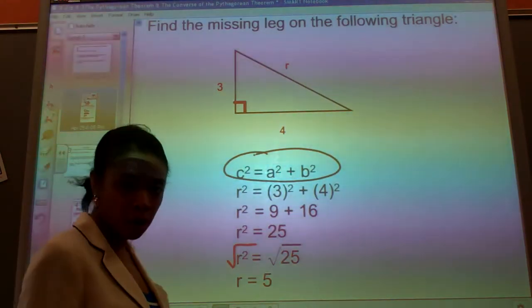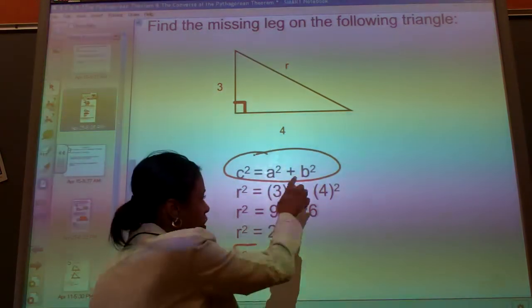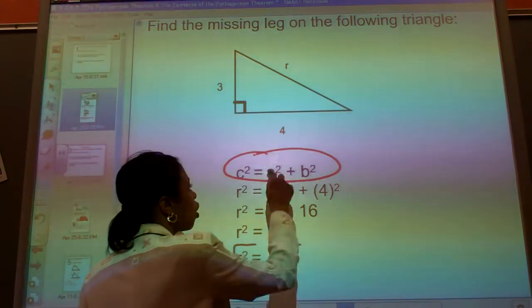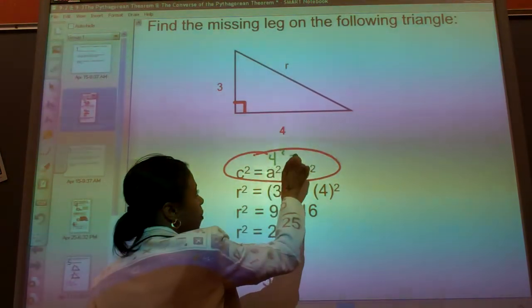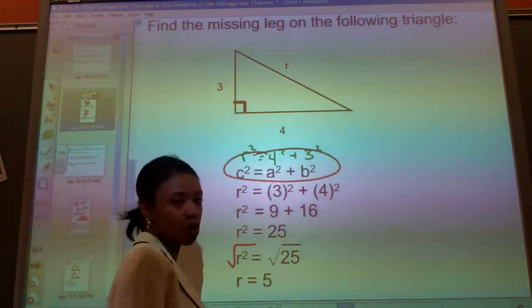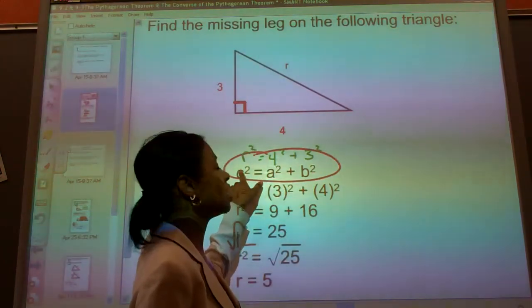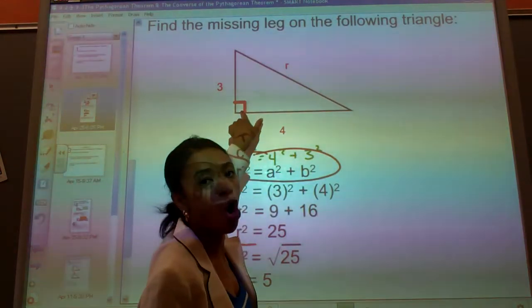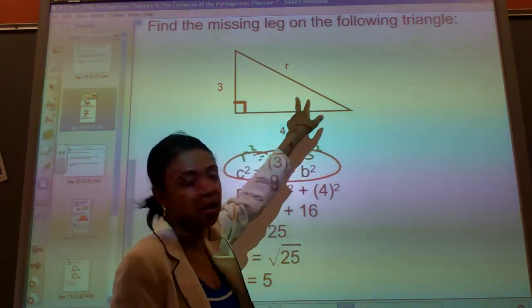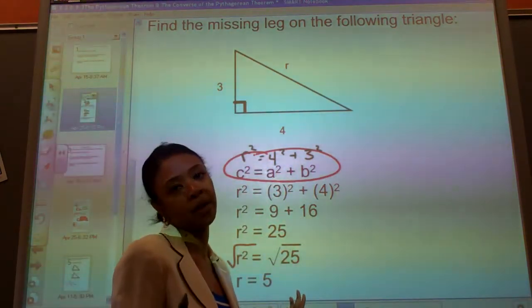Now, just for a quick reminder, it doesn't matter which one you call A and which leg you call B. So if I wanted to go A was 4 squared plus 3 squared is equal to the R squared, it will still work. However, the only thing you cannot switch is the C. C must always be the hypotenuse or the longest leg. You can switch A and B around. C squared is equal to B squared plus A squared. It doesn't matter.